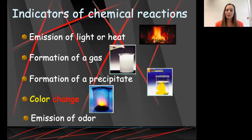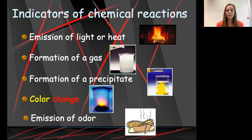And the third one is emission of an odor. Usually the emission of an odor has to do with the formation of a gas, but sometimes we can't see the formation of a gas but we can smell the formation of a gas. Anytime we have an emission of an odor, we can think of that as an indicator of a chemical reaction.